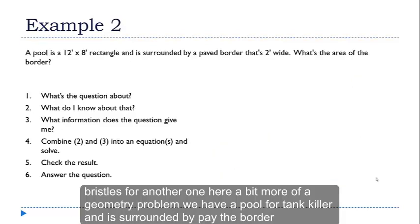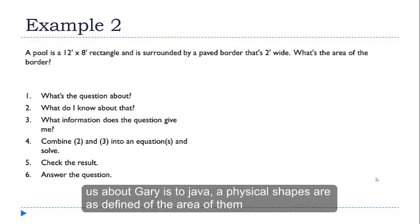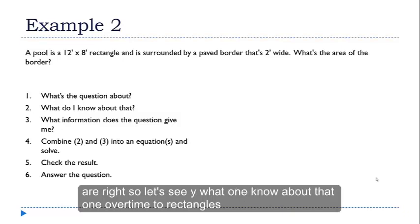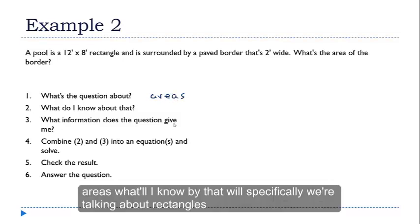Let's try another one here. More of a geometry problem. We have a pool. It's rectangular. And it's surrounded by a paved border. And I want to know the area of the border. So step number one. What's the question about? It's about areas. It's a geometry problem. We have physical shapes and we're asked to find the area of them. What do I know about that? I know we're talking about rectangles. Specifically, we're talking about rectangles. And I know that the area of a rectangle is length times width.